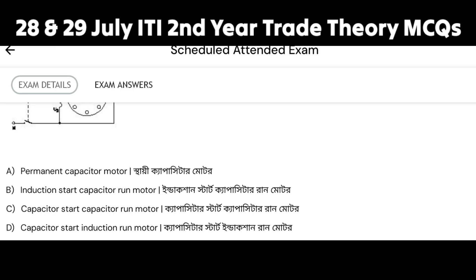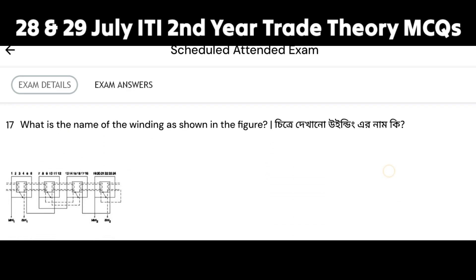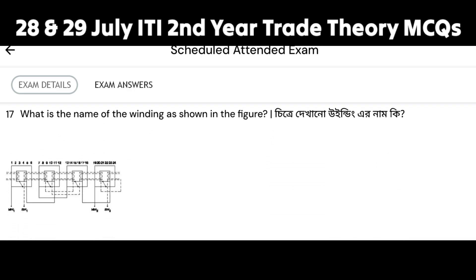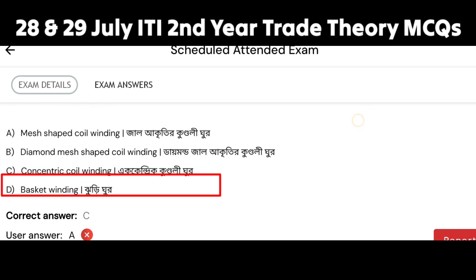The capacitor motor is the correct answer. What is the name of the winding as shown in the figure? This is an important CVT exam question, set number 3. This winding is the correct answer.